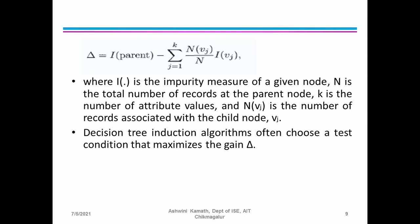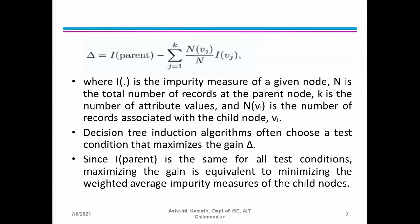Decision tree induction algorithms often choose a test condition that maximizes the gain Δ. When choosing an attribute based on the test condition, we should maximize the gain. Since I(parent) is the same for all test conditions, maximizing the gain is equivalent to minimizing the weighted average of impurity measures of the child nodes.